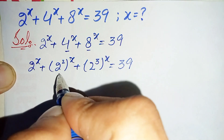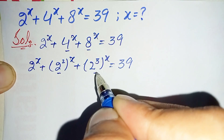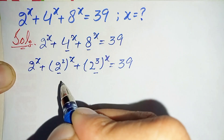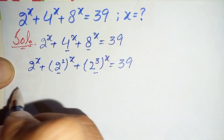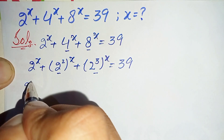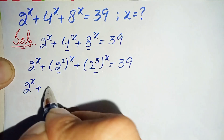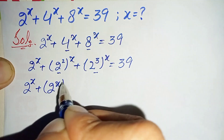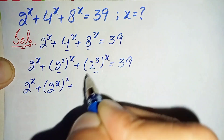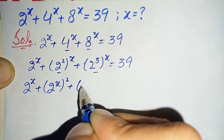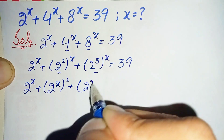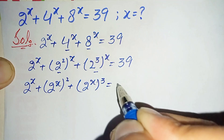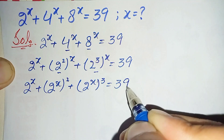Next, in these two terms we will use an exponent math property and interchange the position of the powers with each other. So this will become 2 raised to power x, plus 2 raised to power x whole square, plus 2 raised to power x whole cube, is equal to 39.